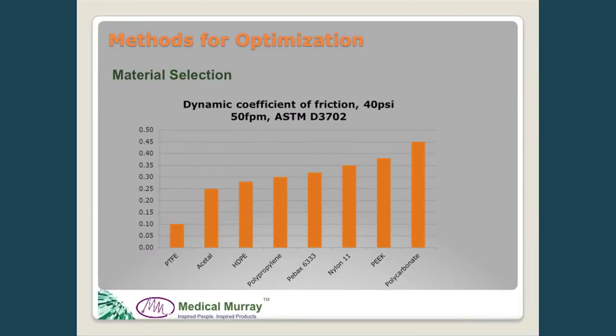Having outlined several challenges with accurate axial positioning, let's go over methods we can use to optimize the design to overcome them. The key is material selection — choosing the right materials gives us the baseline function that we can use to evaluate loads and decide what further solutions are needed.